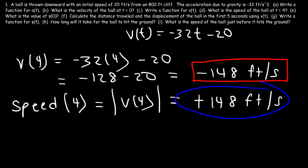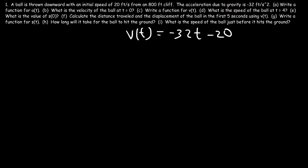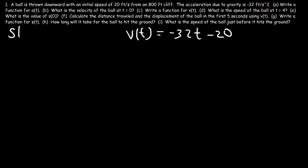Now let's move on to part E. What is the value of s of 0, the position of the ball at t equals 0? The ball was thrown downward from an 800-foot cliff, so the initial position — keep in mind s of t represents the position function — is 800 feet. The ball was 800 feet above ground level at the beginning of this problem, so s of 0 is 800 feet.